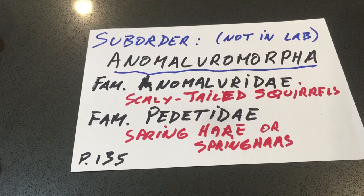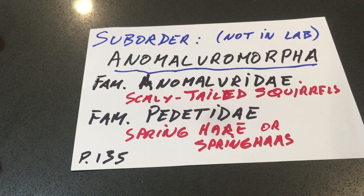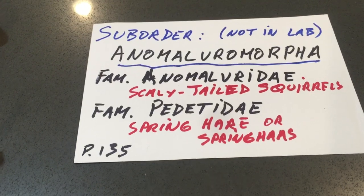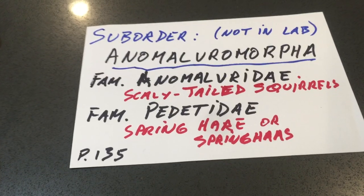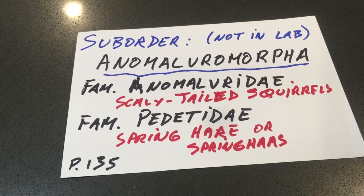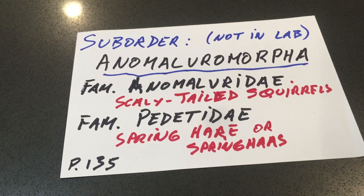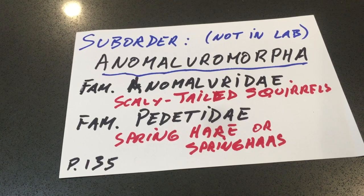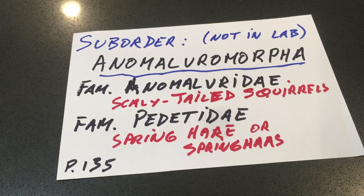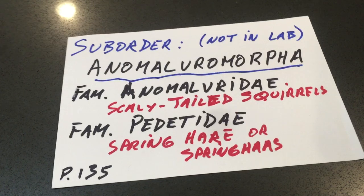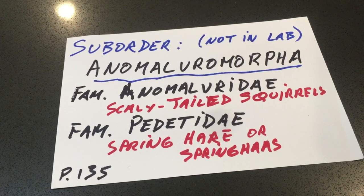There are only two or three families in this suborder — very unusual rodents from Southeast Asia and South Africa, respectively. Go to page 135 in your lab manual and also the relevant part of your textbook to be familiar with these, because you do need to know this suborder. If you can even remember one of the families and one of the common names, that would be good.